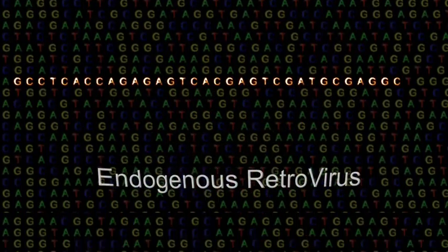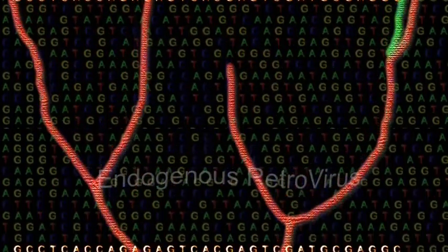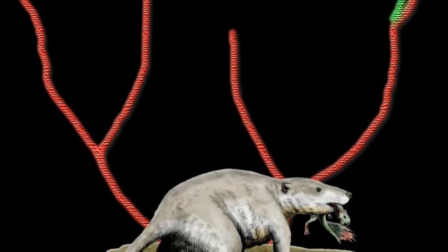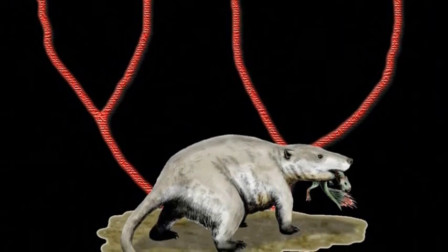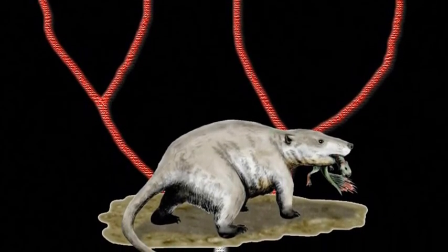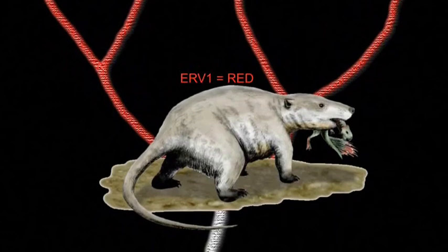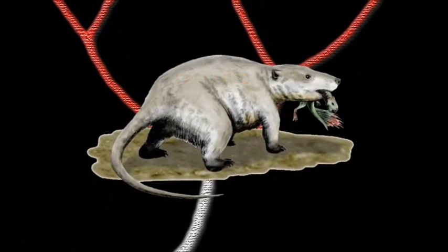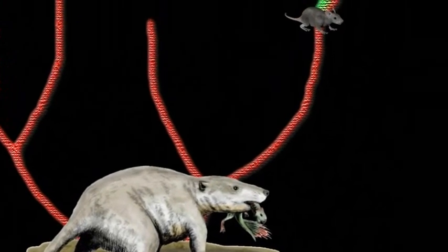Let's examine how endogenous retroviruses, or ERVs, would behave within a model of evolution by common descent. Suppose an ancient creature, let's call it Primus Mammalius, is the common ancestor of all modern mammals and is infected by a retrovirus that becomes endogenous. All of the Primus descendants would be expected to carry the same ERV, let's call it ERV-1, in the same chromosomal location. Fast forward 30 million years — different lineages have evolved, and there are now many different types of mammals, all carrying ERV-1.